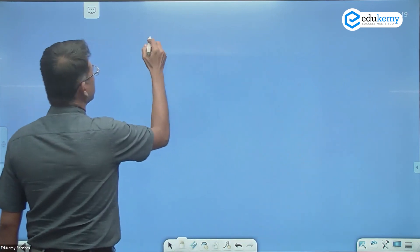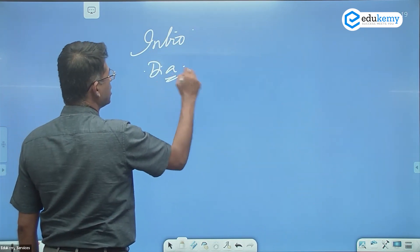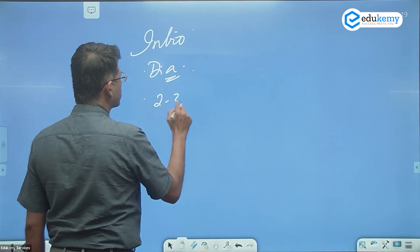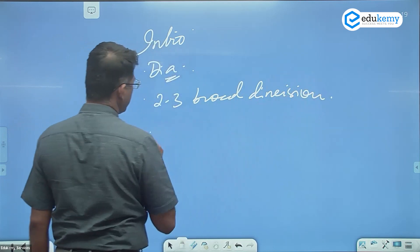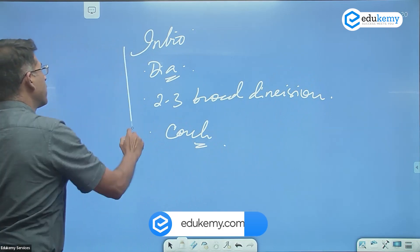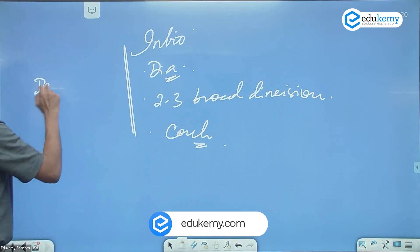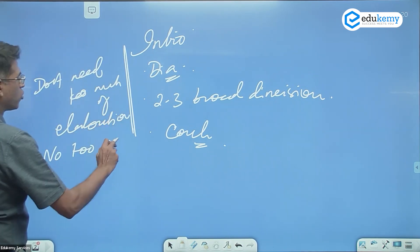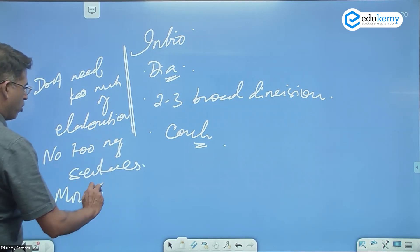As a rule, there should be an introduction. In geography, there should be a diagram. Identify two or three broad dimensions on which you will write, and you should have one conclusion. The good part about GS writing is you don't need too much elaboration or too many sentences.